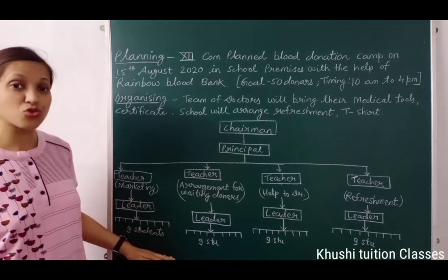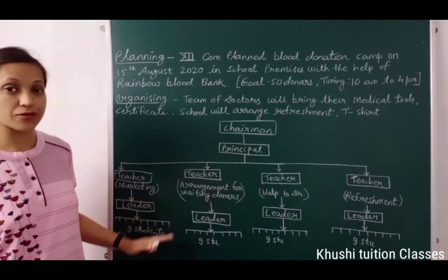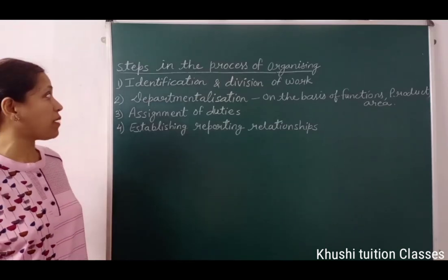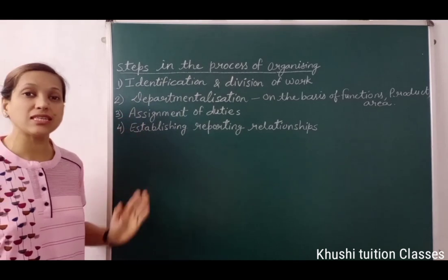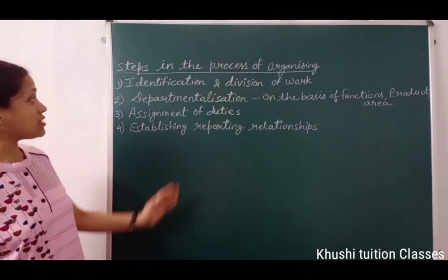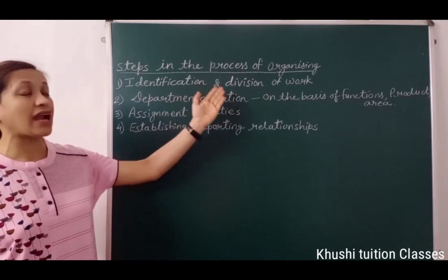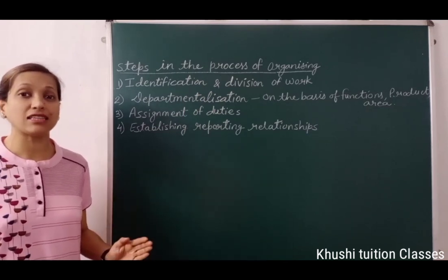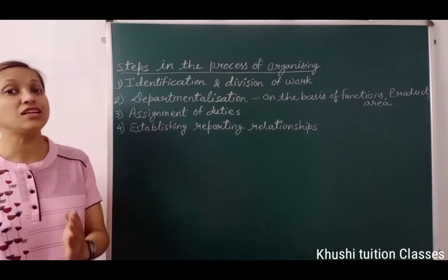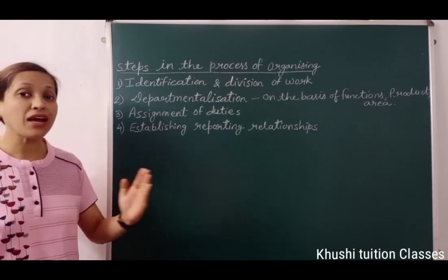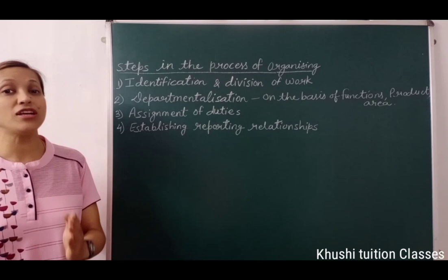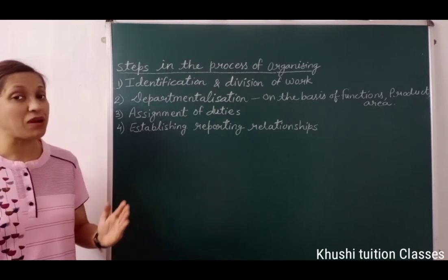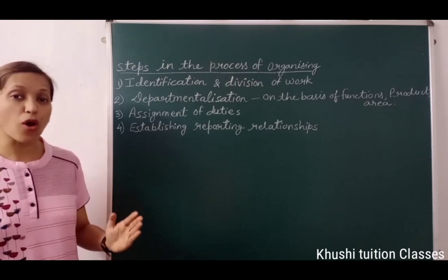I hope you have understood the organizational structure. Organizing से related example समझने के बाद, आपको organizing process बहुत अच्छे से समझ आ जाएगी. The first step is identification and division of work. Planning की basis पर total work identify किया जाता है, फिर इसे different functional activities में divide करते हैं. यह different activities employees में divide की जाती हैं, जिससे कोई भी employee overburden नहीं होता और duplication of efforts भी avoid होते हैं.